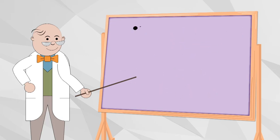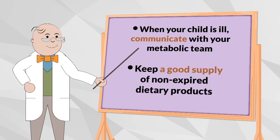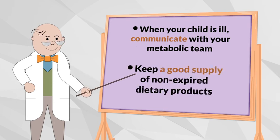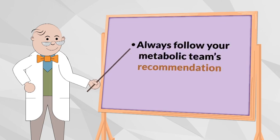When your child is ill or not behaving as usual, it is imperative to contact your metabolic team immediately. They will determine the best course of action. Always ensure you have a good supply of special dietary products and metabolic formula and that they are not expired. Continue to give the amount of formula as prescribed by your metabolic clinic. And remember to always follow your metabolic team's recommendation to offer your child the best opportunity for normal growth and development.